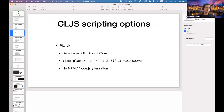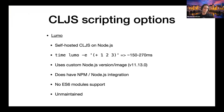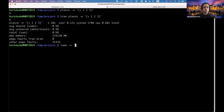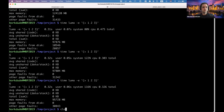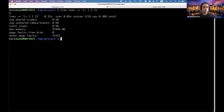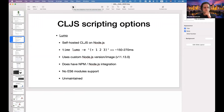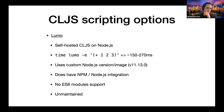Plank is still maintained by Mike Fikes, who is the author. Another option available a few years ago — and still available — is Lumo, also self-hosted ClojureScript running on Node.js. It has pretty great startup time: live demo shows almost half a second, around 300 milliseconds. But the drawback of Lumo is that it's no longer maintained — Antonio Monteiro was the author and moved on to Camel — and nobody stepped in to maintain it.